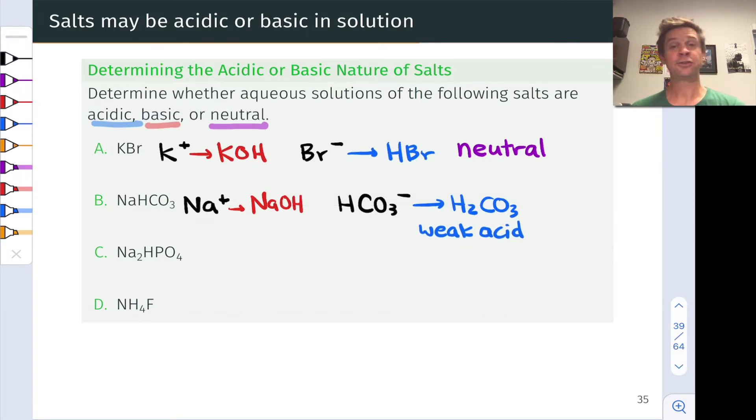This means that HCO3 minus is a weak base. Let's write that under HCO3 minus. This is a weak base. And so the salt overall has a completely unreactive cation but a weakly basic anion. That makes the salt overall basic. Solutions of NaHCO3 in water will give basic pH values.